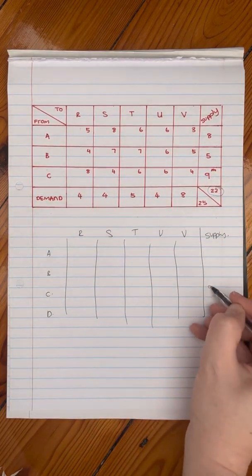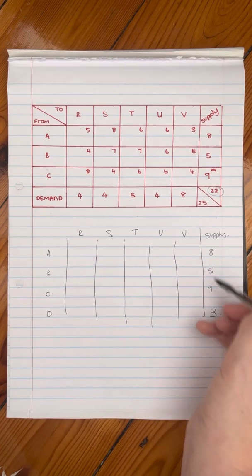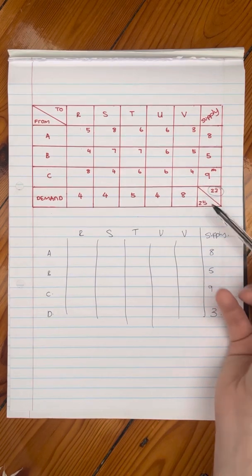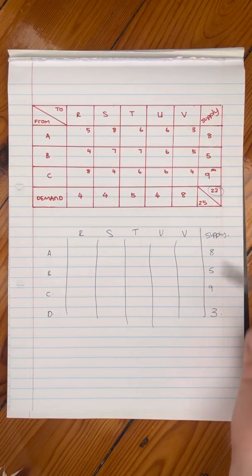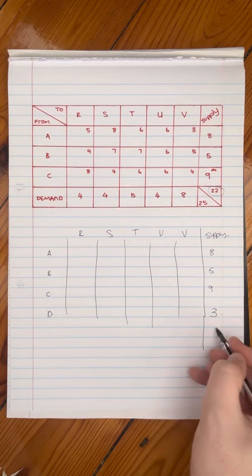And the reason for that is now when you add it up, you have eight plus five plus nine gives you that 22. You want it to be 25 because you want the supply and the demand to be equal to each other. So you just add a three over there and then it becomes that 25.